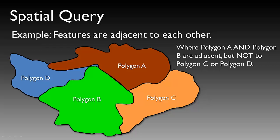Another example of a spatial query is one whereby you would select polygon features that have some topological relationship to one another. In this case, we may like to select features that are adjacent to each other, such as where polygon A and polygon B are adjacent, but not to polygon C or polygon D. The GIS would show us these areas between polygon A and polygon B that meet our criteria or our spatial query.